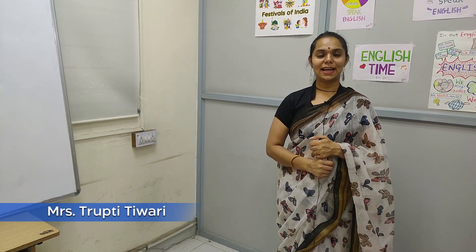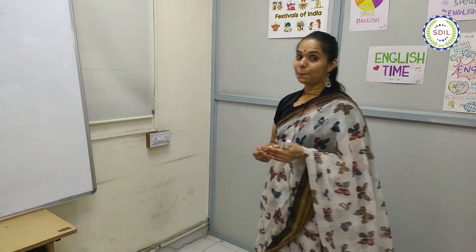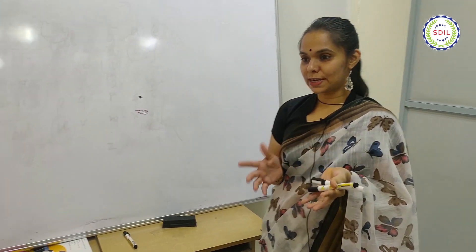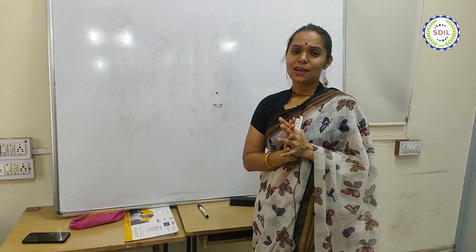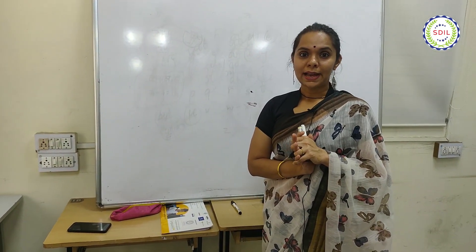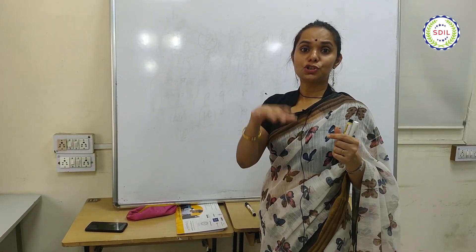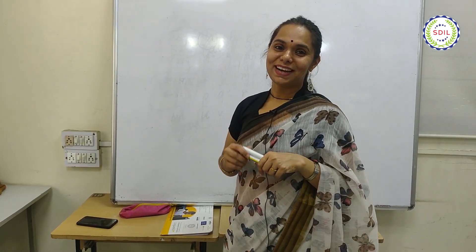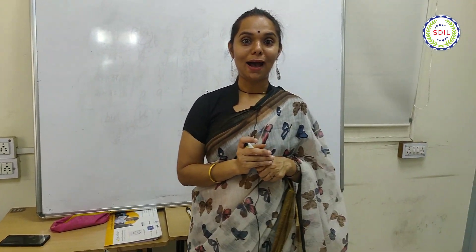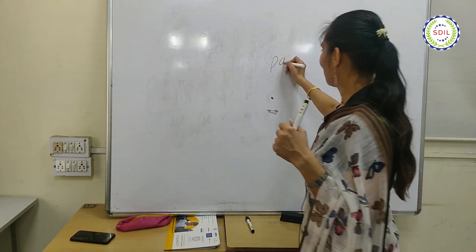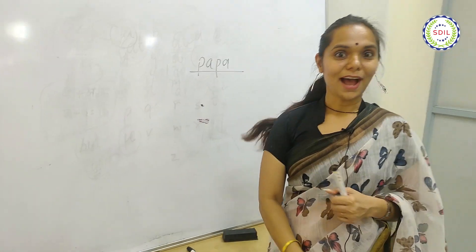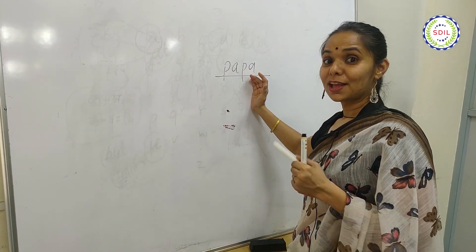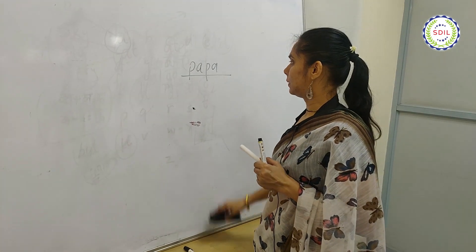Namaskar everyone, welcome to the channel of STL. Following our previous discussion, I got a request about the pronunciation of consonants — how we pronounce them incorrectly, which is very common. Many times the impact of the words we use in daily life is so high that we pronounce the same word incorrectly. The most common example is 'Papa' — there is no double P; it is P-A-P-A. Maybe due to Dutch or Portuguese influence, but in English it is 'Pa Pa'. This is how we pronounce things incorrectly.